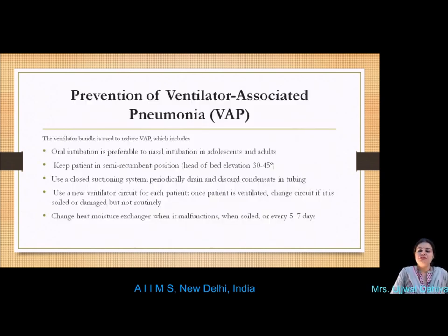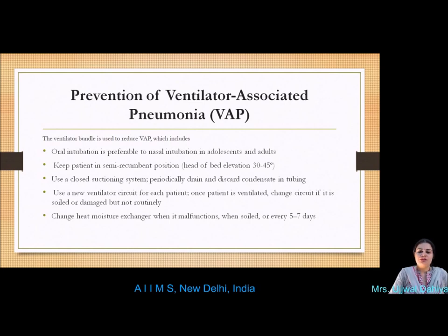Prevention of ventilator-associated pneumonia is critical for intubated ICU patients, as VAP may occur within 48 to 72 hours of intubation. The VAP bundle includes: hand hygiene; head of bed elevated 30 to 45 degrees; oral care every 4 to 6 hours; maintaining endotracheal tube cuff pressure at 30 to 35 cm of water every 4 hours; enteral nutrition support with gastric residual volume monitoring; daily evaluation for ventilator removal; using washable tracheal tubes for continuous subglottic suctioning; using a closed suctioning system; and changing ventilator circuits when soiled or damaged, and heat moisture exchangers every 5 to 7 days or when malfunctioning.